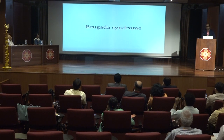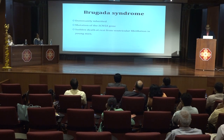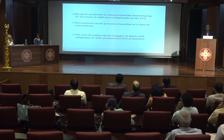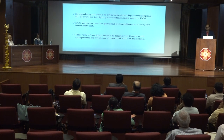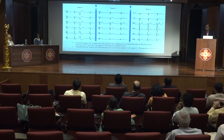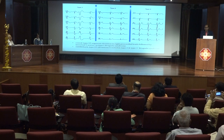Brugada syndrome is the second most common ion channelopathy. It is an autosomal dominant disorder more common in male patients, presenting with sudden death at rest from ventricular fibrillation in young men. Brugada syndrome is characterized by downsloping ST segment elevation in the right precordial leads. ECG changes may be present at rest or appear intermittently, and the risk of sudden cardiac death is higher in symptomatic patients or those with abnormal ECG at baseline. Type 1 is characterized by coved ST segment elevation in right precordial leads followed by inverted T waves, while types 2 and 3 show a saddleback-type ST segment elevation.